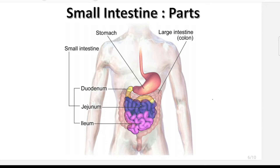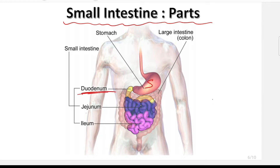In this video we are going to cover the duodenum. Before starting, we should know the parts of the small intestine. In the last class we studied about the stomach, and the stomach continues as the small intestine. The first part is the duodenum, followed by the jejunum and ileum — these three parts belong to the small intestine.